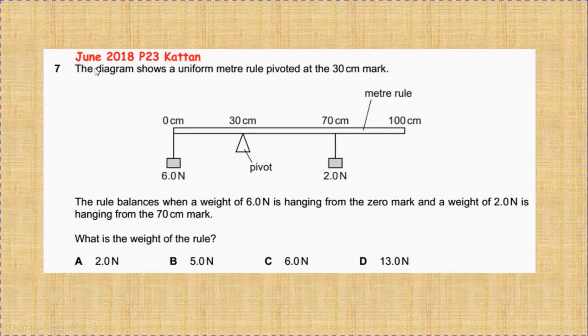Hi guys, this is June 2018 paper 2 variant 3 question 7. The diagram shows a uniform meter rule pivoted at the 30 centimeter mark. The rule balances when a weight of 6 newtons is hanging from the zero mark.